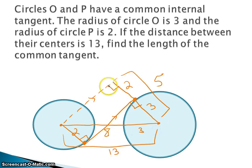So if I look at this right triangle, I have a hypotenuse of 13, a leg of 5, which means my other leg must be 12. My 5, 12, 13 triple. Which means my common internal tangent is also 12. And that is my answer.